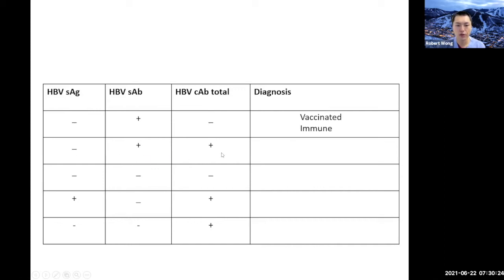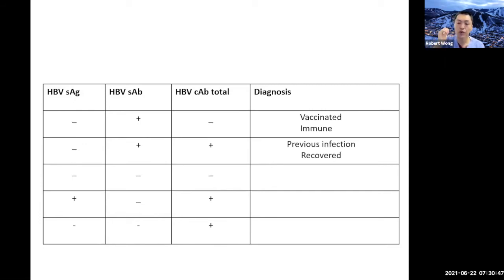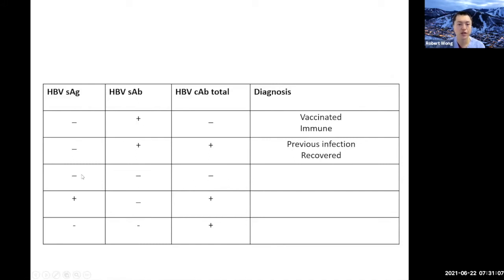Second scenario: core antibody positive, so they're exposed; surface antibody positive, so they're immune; and no surface antigen. Exposed, immune, but no chronic infection — this is someone who has been infected but has recovered, either through self-immunity or antiviral therapy. Third scenario: everything negative — never been exposed, don't have immunity, no infection. This person has never been infected and needs to be vaccinated.